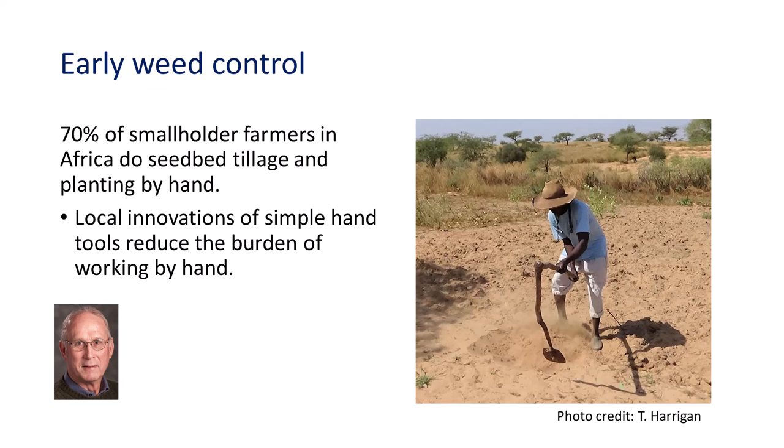The Senegalese farmer on the right uses a long-handled hoe with a unique design to loosen and aerate the soil for early season weed control and planting. You can find many clever modifications of hand tools to match local crop and soil conditions.